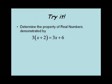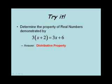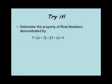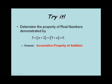Let's try some practice. Let's determine the property of real numbers demonstrated by the following equation: 3 times (x plus 2) equals 3x plus 6. The answer is the distributive property. Next, which property is illustrated by the equation 3 plus (x plus 2) equals (3 plus x) plus 6? The answer is the associative property of addition.